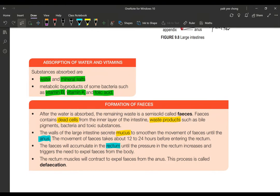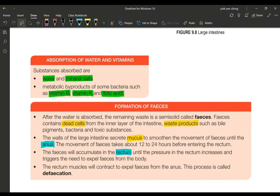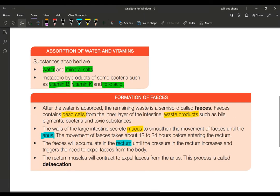Now let's look at what substances are absorbed: water and mineral salts, and also metabolic byproducts of bacteria. We have a lot of good bacteria, and also a minor portion of other bacteria which produce good substances for us, which is vitamin B, vitamin K, and folic acid.